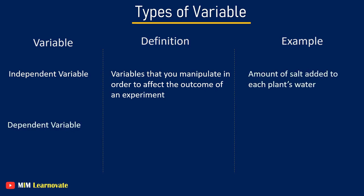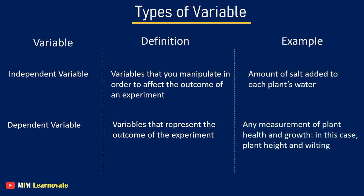Dependent variable. The dependent variable is a variable that represents the outcome of the experiment. For example, any measurement of plant health and growth. In this case, plant height and wilting.